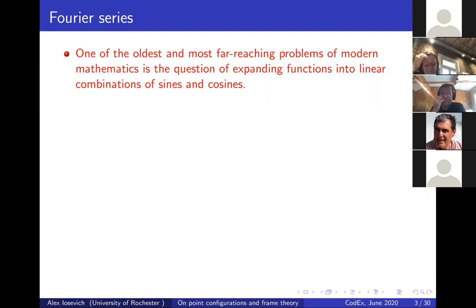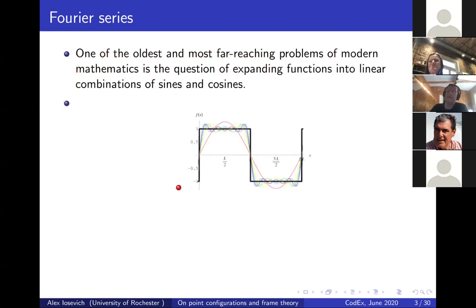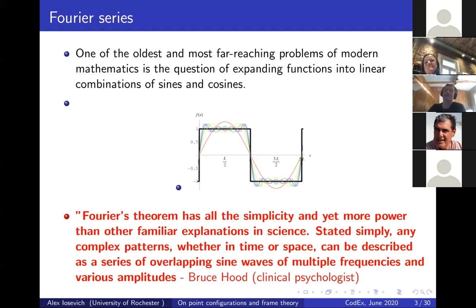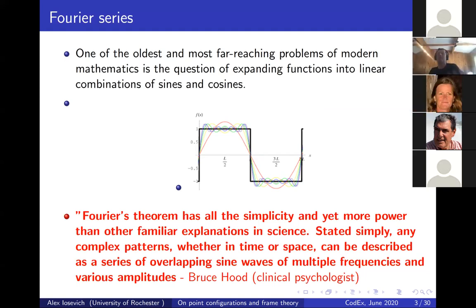One of the oldest and most far-reaching problems in modern mathematics is the question of expanding a function into linear combinations of sines and cosines. I found this wonderful quote by Bruce Hood, a clinical psychologist, who said that Fourier's theorem has all the simplicity and yet more power than other familiar explanations. Complex patterns in time and space can be described as a series of overlapping sine waves at multiple frequencies and various amplitudes. What I find wonderful is that what gets brushed under the rug — whether it is actually possible to express everything as an overlapping sum of sine waves — encompasses probably 90% of my work.